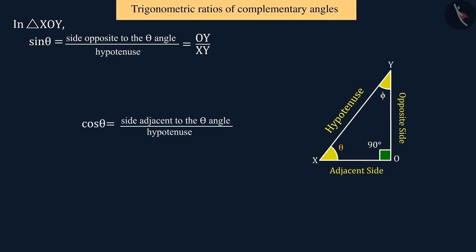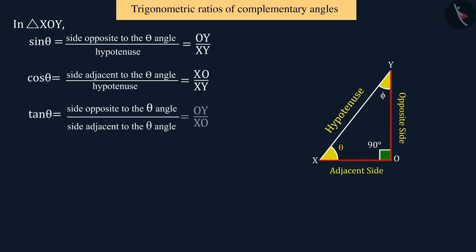And if we talk of cos theta, then its value will be equal to the ratio of adjacent side and hypotenuse. Here, the adjacent side is XO and the hypotenuse is XY.